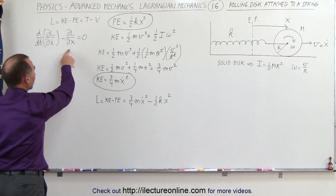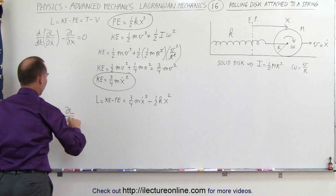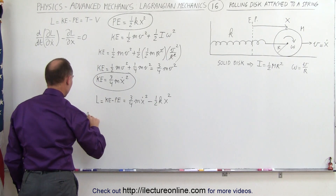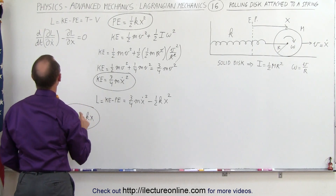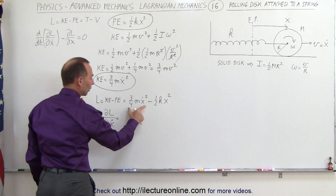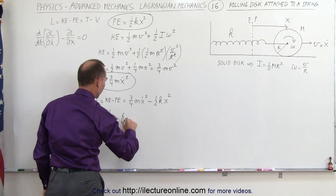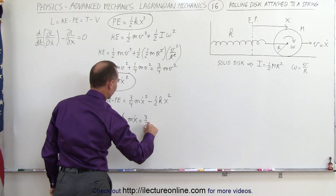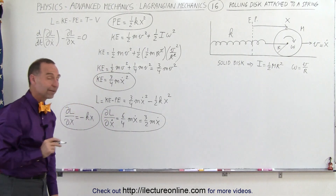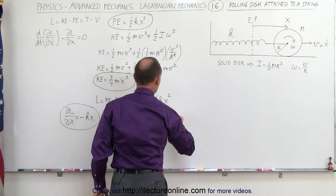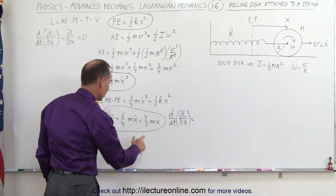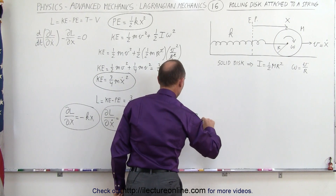Now we can find the partial of the Lagrangian with respect to x. Notice there's only one term that has x in it, so the partial of L with respect to x is negative kx. The partial of L with respect to x-dot has only one term, giving 2 times 3 over 4, which is 6 over 4, times m x-dot to the first power — equal to three halves m x-dot. Taking the time derivative, d/dt of the partial of L with respect to x-dot, gives three halves m x-double-dot.